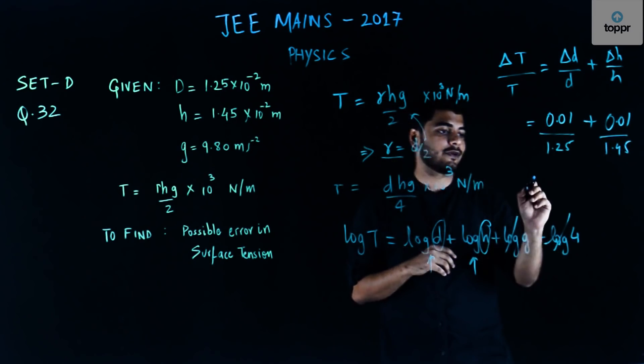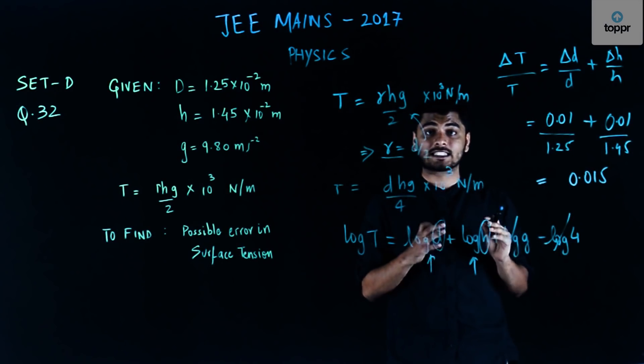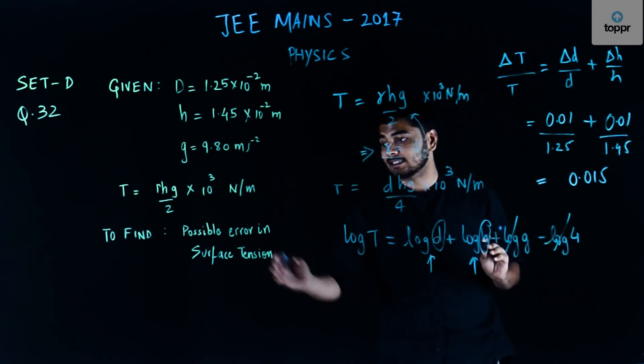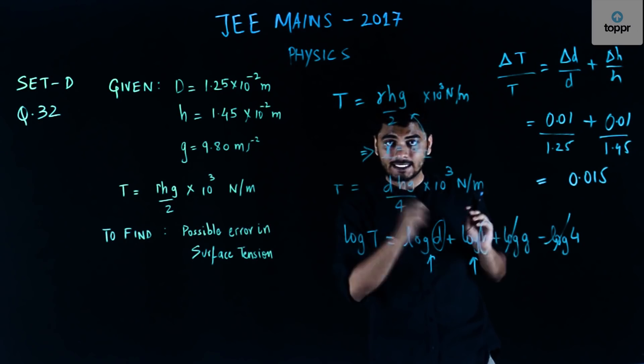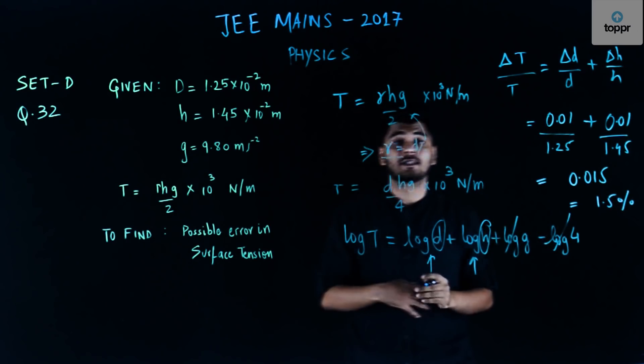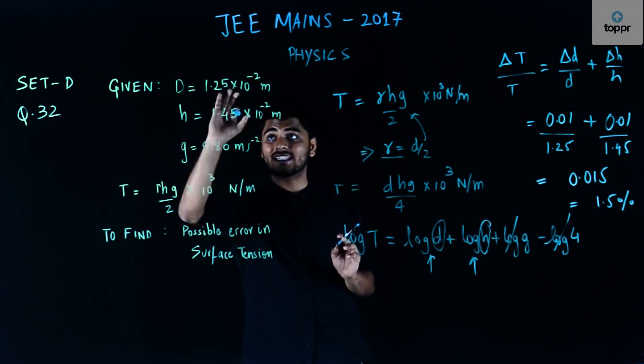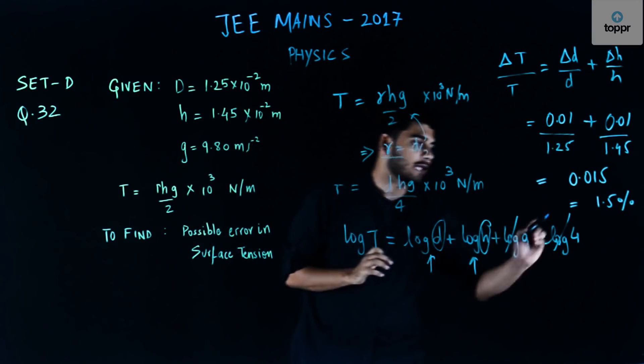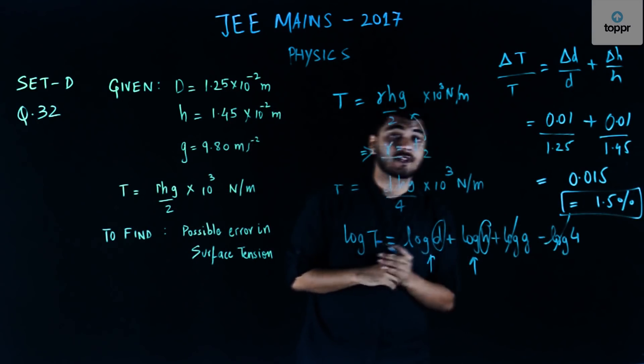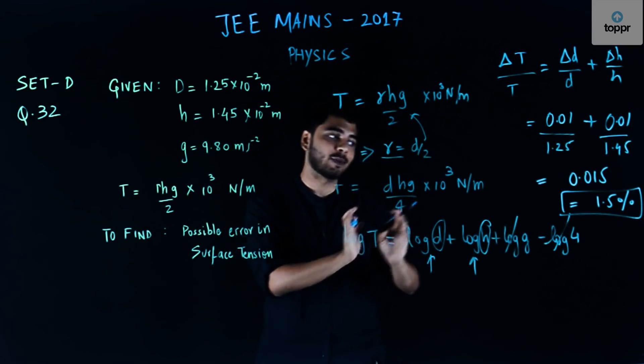When you solve this you get your final answer to be 0.015, or if I have to express it in terms of percentage, that is the possible error in terms of percentage in surface tension, it will come out to be 1.5%. So the maximum possible error in the calculation of surface tension using these values and this formula can be 1.5%. I hope you understood what the question exactly was and how do we get to the answer.